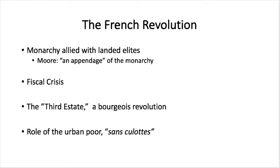The Estates General is made up of three estates. The first estate is the Catholic clergy — the hierarchy of the Catholic Church, illustrating how powerful they were. The second estate was the nobility — the titled marquises, dukes, and earls. The third estate was basically everybody else, representing about 90% of the French population, though it was dominated by lawyers and urban merchants and some commercially minded landowners who were not nobles.